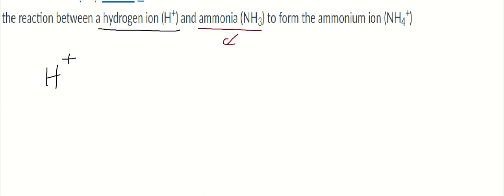So let's draw the Lewis structure for NH3. Nitrogen has five valence electrons, and hydrogen has one. There are three hydrogens, so that's going to give us a total of eight valence electrons.